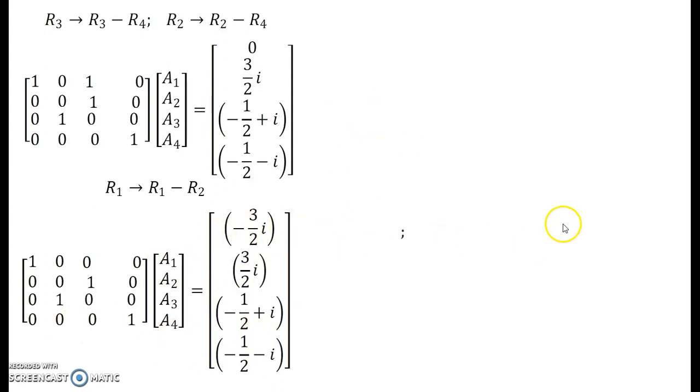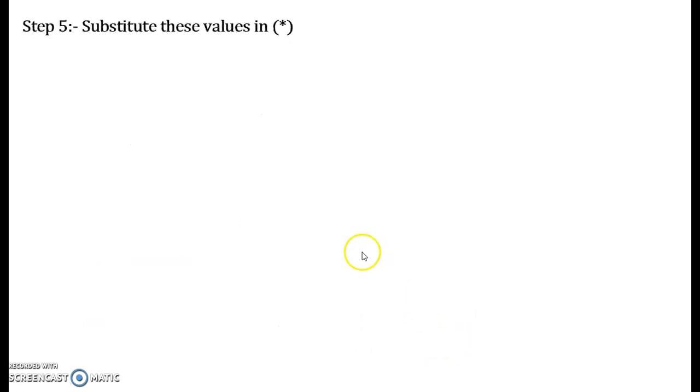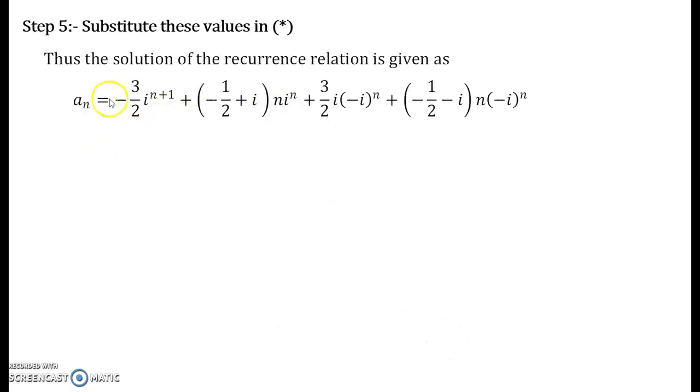And when you solve this further, you obtain your coefficients A_1, A_2, A_3, A_4. You just multiply these matrices. You obtain A_1 = -3i/2, A_3 = 3i/2, A_2 = -1/2 + i, A_4 = -1/2 - i. Substitute these values in the general solution. You obtain your final answer for the question that you had seen.